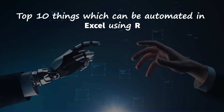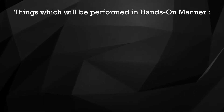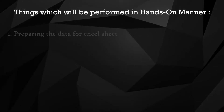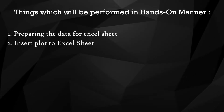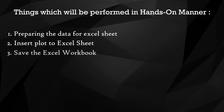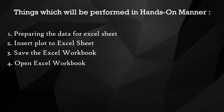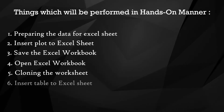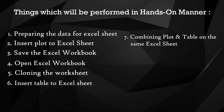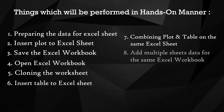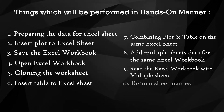Now as a data scientist who is specifically into analyzing the data, it will be a greater asset to you if you can learn to explain your statistical findings in an Excel sheet, which is what most of your users and managers are aware of. In this video, I'll walk you through the top 10 things which you can automate in Excel using our programming language. We'll learn to prepare data, plot data to an Excel sheet, save the Excel notebook, open an Excel workbook from R programming, clone the worksheet, insert tables, combine plots and tables on the same sheet, add multiple sheets, and read workbooks with multiple sheets and return the sheet names.